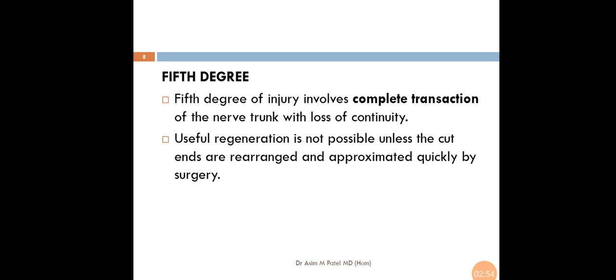Fifth Degree of Injury involves complete transection of the nerve trunk with loss of continuity. Useful regeneration is not possible unless the cut ends are rearranged and approximated quickly by surgeon.